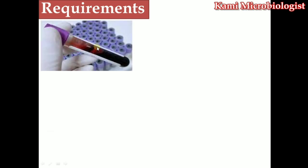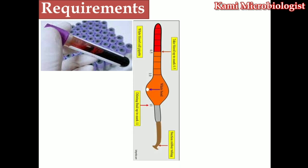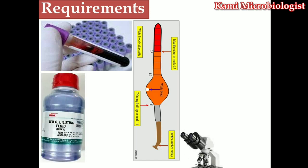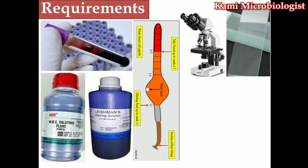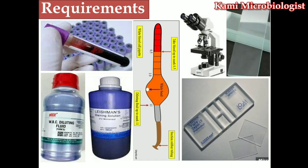For performing DLC, we need blood from an EDTA tube, a white blood cell pipette, WBC dilution fluid, a microscope, Leishman stain, Giemsa stain, slides, and a hemocytometer or Neubauer chamber. There are two methods: the simple slide method and the hemocytometer or Neubauer chamber method.